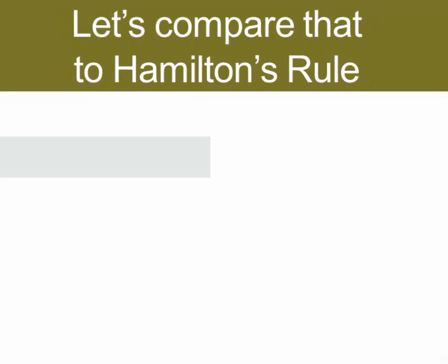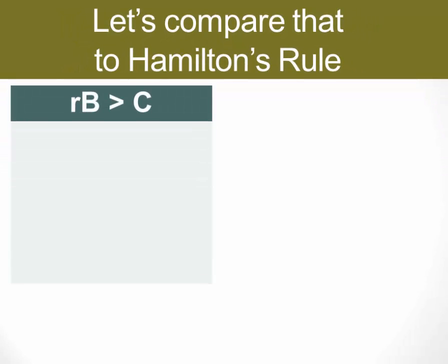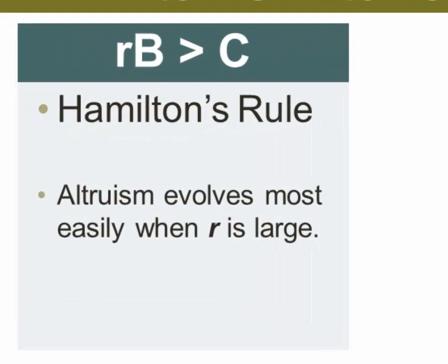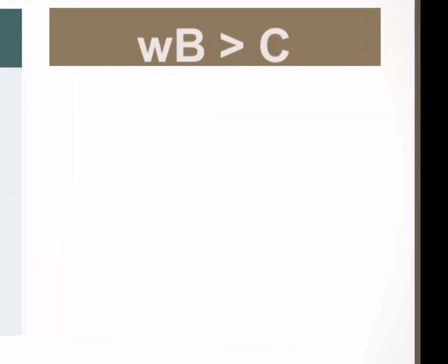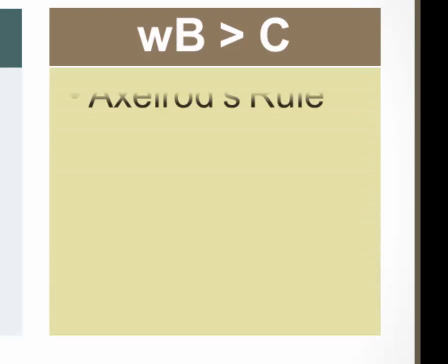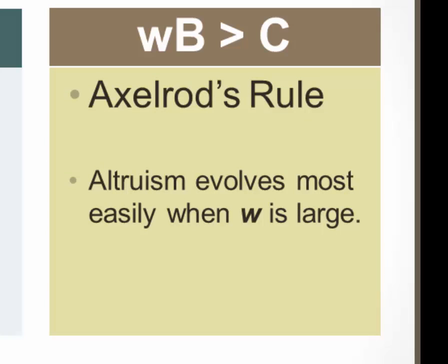Let's compare that finding to Hamilton's rule. In Hamilton's rule, we found that altruism could evolve most easily when the relatedness was high. So when R is largest, Hamilton's rule is most powerful, and a similar thing holds in parallel for Axelrod's rule. If we're looking at the evolution of altruism, that's going to be most easy when W is large. What this means is that relatedness and the likelihood of meeting again are operating in parallel ways in these two models.